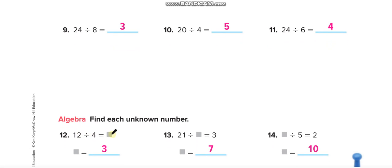Here, you have to find the unknown. No need of repeated subtraction in these three questions. 12 divided by 4 is 3. 21 divided by what will give me 3? Or you can say 3 times what will give you 21. So that is equal to 7. What divided by 5 equals to 2. Or in opposite way, you can see 2 times 5 equals what? So 10.